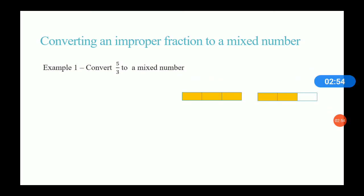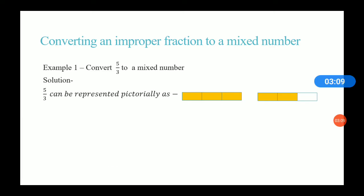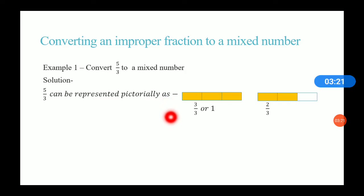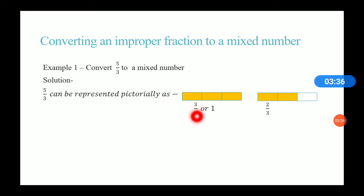Suppose a question is given: convert 5/3, which is an improper fraction, to a mixed number. If you convert 5/3, you get 1 2/3. Let me represent this pictorially. When you split 5/3, you get 3/3 plus 2/3. Now 3/3 is nothing but 1 whole, so 1 whole plus 2/3 gives us the mixed number.